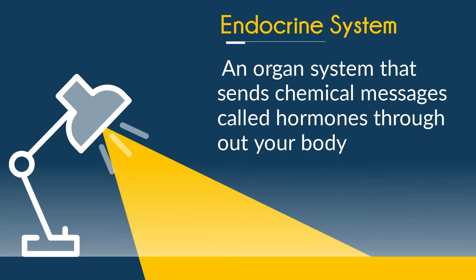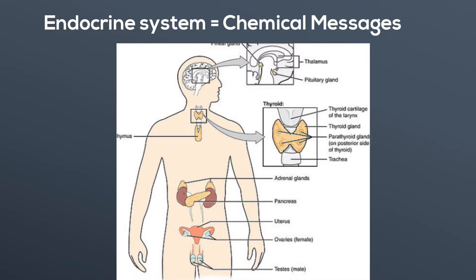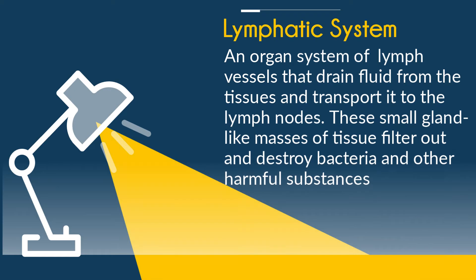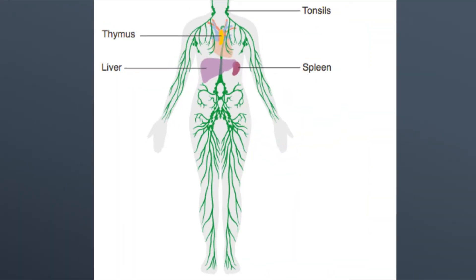The endocrine system — an organ system that sends chemical messages called hormones throughout your body. The lymphatic system is an organ system of lymph vessels that drain fluid from the tissues and transport it to the lymph nodes. These small gland-like masses of tissue filter out and destroy bacteria and other harmful substances. Here's the lymphatic system.